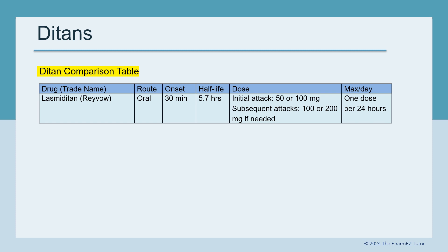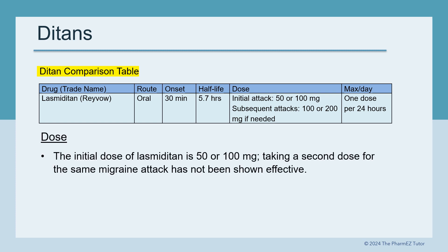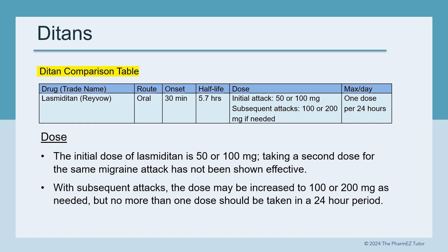At present, there is only one DITAN on the market — Lasmiditan, or Reyvow. The onset of Lasmiditan is 30 minutes, which is slightly faster than the G-PANs. The initial dose is 50 or 100 milligrams. Note that taking a second dose for the same migraine attack has not been shown to be effective. With subsequent attacks, the dose may be increased to 100 or 200 milligrams as needed, but no more than one dose should be taken in a 24-hour period.